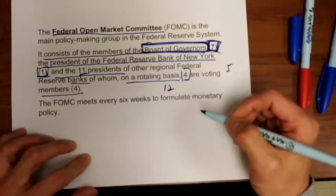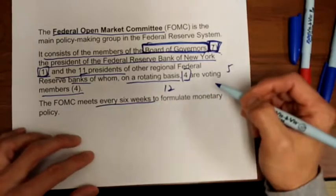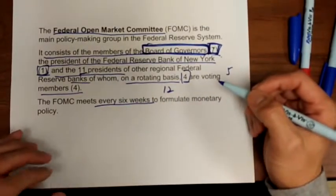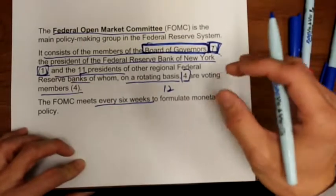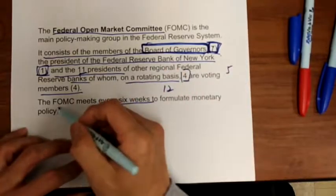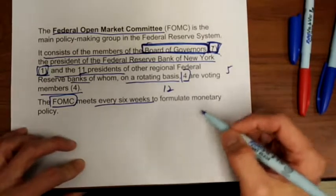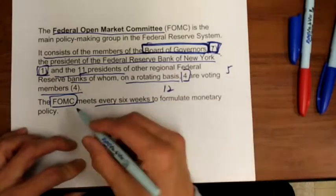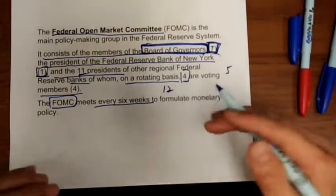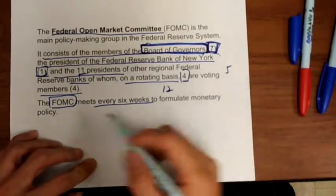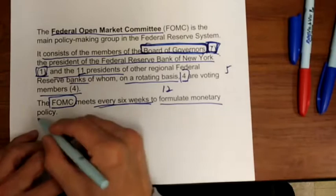If you are in the stock market, you will see that every six weeks there is a Wednesday or Tuesday when the stock market is very quiet. Why? Because investors are waiting for the Federal Open Market Committee's decision on monetary policy. After their meeting, when they announce the result, traders start to trade. So the Federal Open Market Committee meets every six weeks to formulate monetary policy.